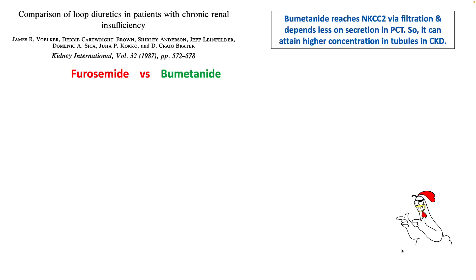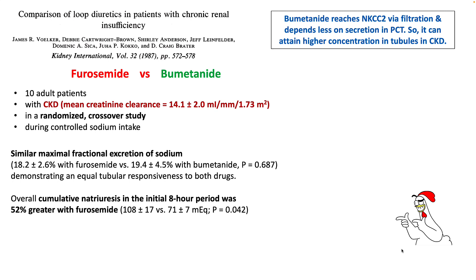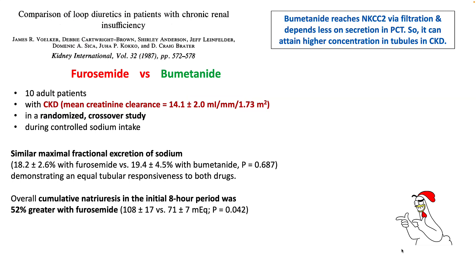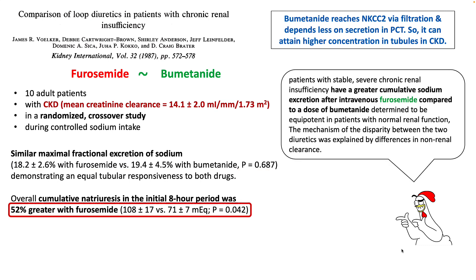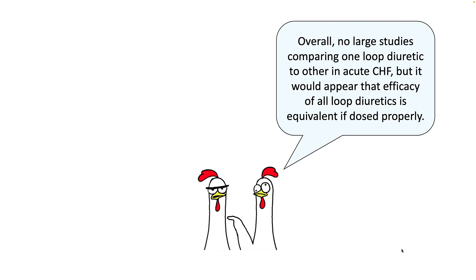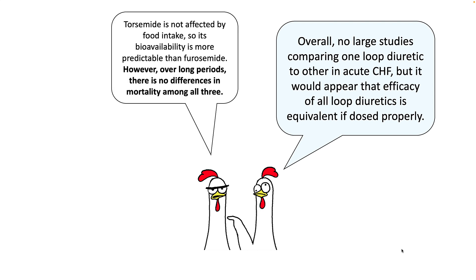Theoretically bumetanide should be more useful in patients with CKD. This study studied 10 patients with CKD with mean creatinine clearance of around 14 in a randomized crossover design, and found that the maximal fractional excretion of sodium was similar in both groups, while the cumulative natriuresis in the initial 8-hour period was actually higher with furosemide compared to bumetanide. Overall, efficacy of all loop diuretics appears equivalent if dosed properly.